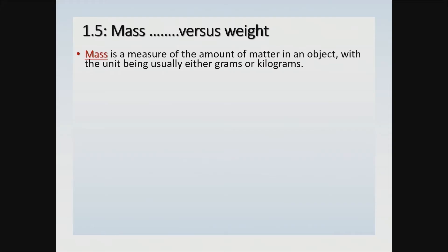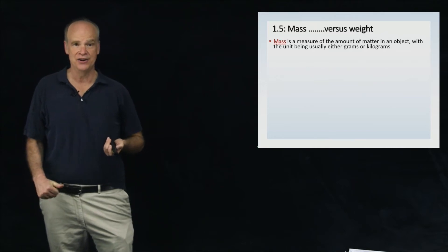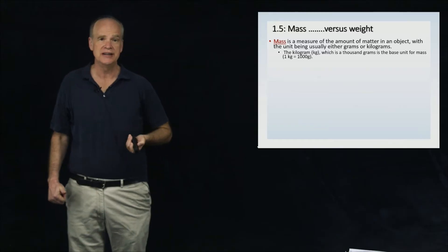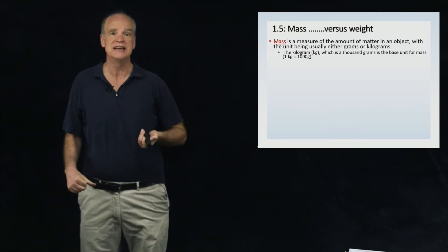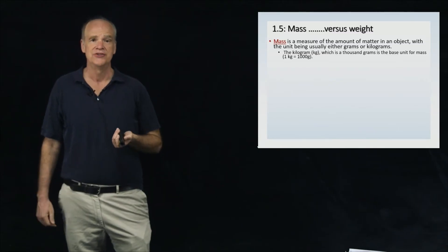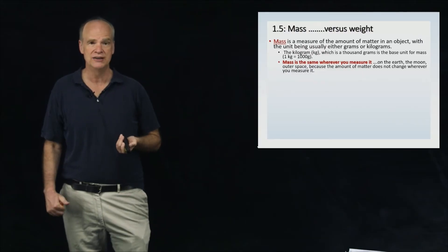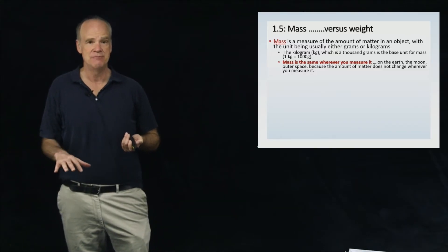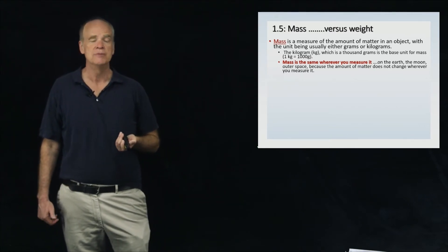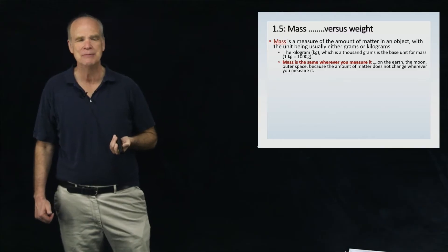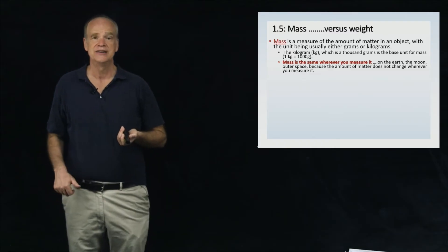Let's talk about the difference between mass and weight. Mass is the measure of the amount of matter that an object has. Importantly, that amount of matter will be exactly the same no matter where you measure it. For example, if a brick has a mass of one kilogram on Earth, it will still have a mass of one kilogram in outer space or on the moon.